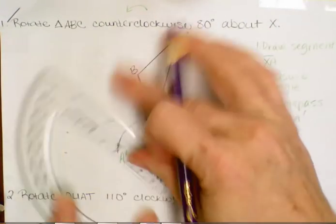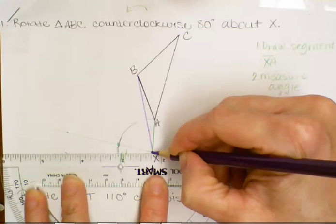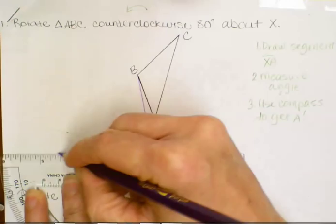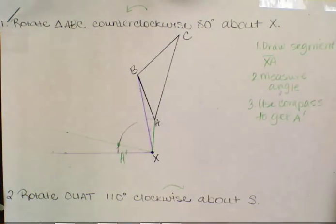Okay, so now that I've got that point, draw the segment connecting X and that new little point we just drew. So I know point B prime is somewhere on that segment. Last step, use the compass to get B prime.